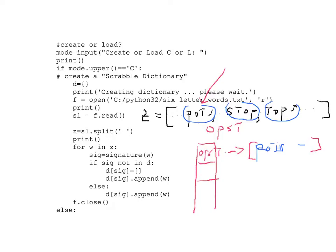Then we go to the next word, the next word, and so on. Eventually we come to the word 'stop'. We take its signature — the signature of stop is OPST. We ask: is the signature not in 'D'? That's going to be false, because OPST was already found when we dealt with 'pots'. So we don't create an empty list; we simply append 'stop' onto the existing list. Then it comes to 'tops' and adds that in too. That is basically the way this thing works.